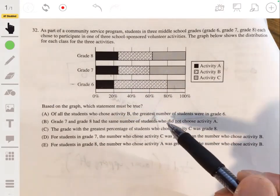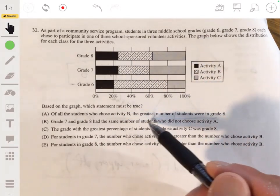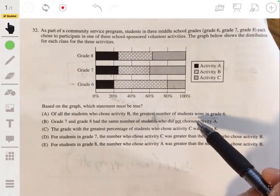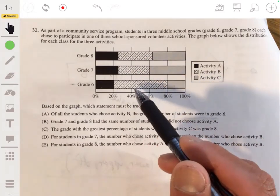All right, seven and eight had the same number of students who did not choose. Again, nope, we can't say the same number. Maybe say same percent, but nope, no same number.